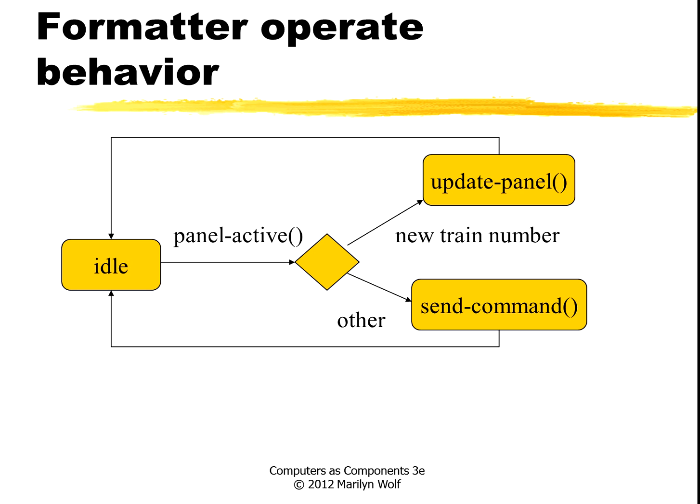Here is a state diagram for the formatter, one of the functions that was in that sequence diagram. This keeps running — it has an idle state, and the panel activate function sets an event when something actually changed on the front panel. When it does, we figure out what happened. If the train number changed, then we update the soft panel display, but we don't have to send a message. If something else changed, then we need to actually do that operation.